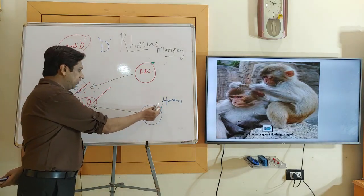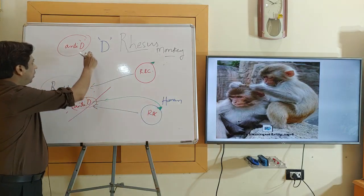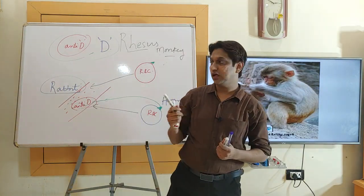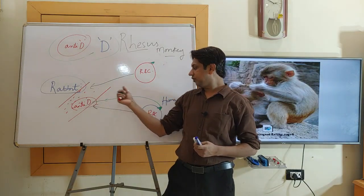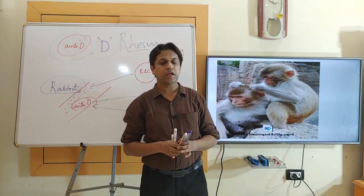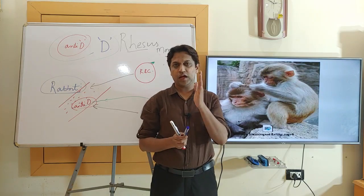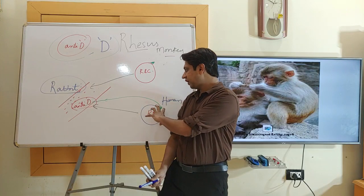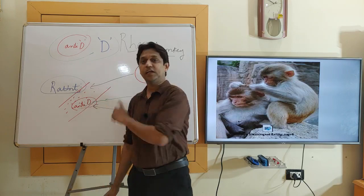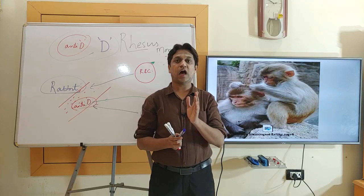From this experiment, they discovered that humans also have the RH antigen on their RBCs. About 85% of the population have this RH antigen and are designated as RH positive. Around 15% of the population do not have this RH antigen, show no agglutination with anti-D antibody, and are designated as RH negative.